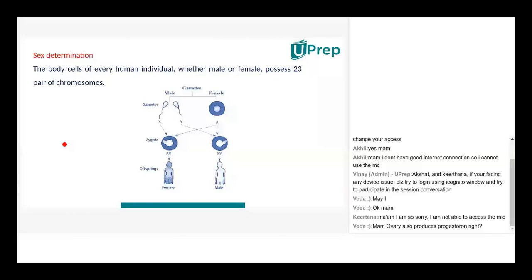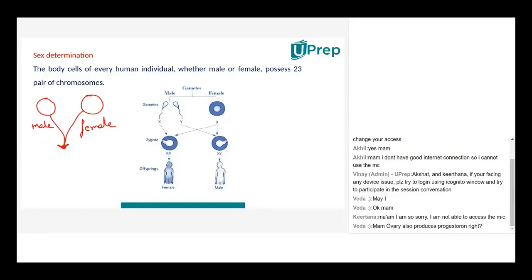How can sex be determined? How is it normally done — whether it's a boy or a girl? I'm sure all of you are aware that when a male parent and a female parent combine through fertilization, a zygote is formed. You must have studied this in classes six and seven.